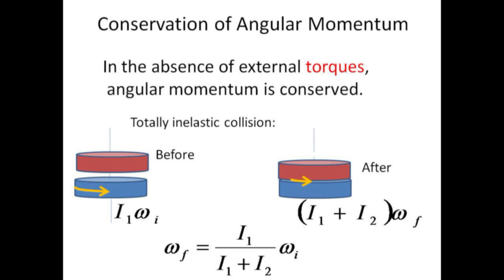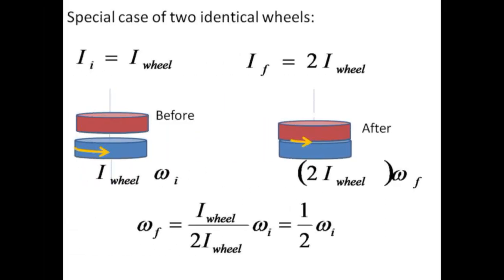Imagine one wheel spinning initially with a moment of inertia, I1, at an angular velocity, omega-1. When a second wheel is dropped on the first and they stick together to both spin, the final moment of inertia is the sum of each moment of inertia. By conservation of angular momentum, the final angular velocity is the ratio of the initial and final moments of inertia times the initial angular velocity. If the two wheels are identical, then the final moment of inertia is twice the initial moment of inertia, and so the angular velocity after the collision is expected to be one half of the original angular velocity.